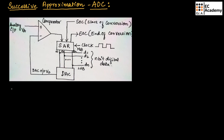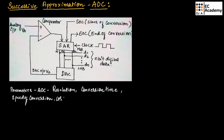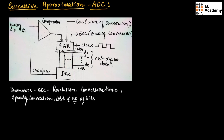The parameters that should be considered while selecting an ADC include resolution, conversion time, speed of conversion, cost of ADC, and number of bits to be converted from the analog signal.